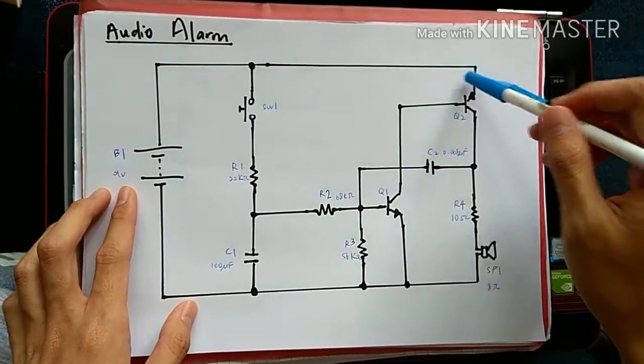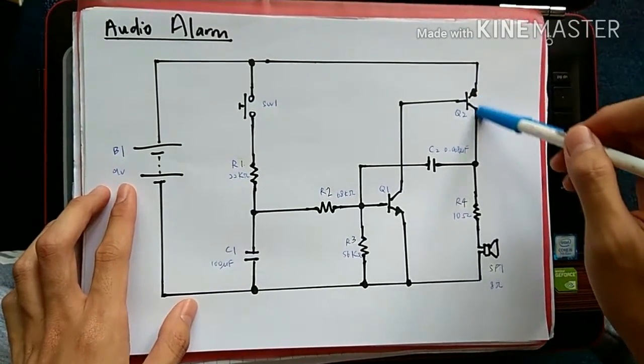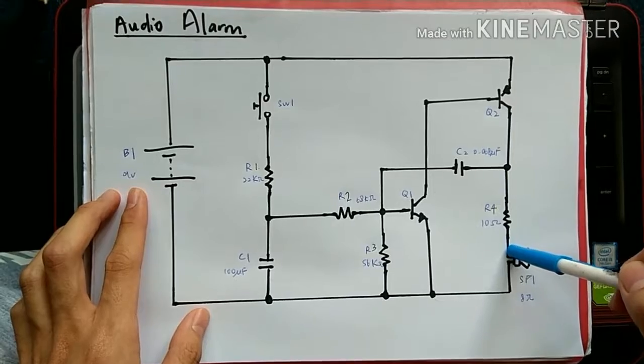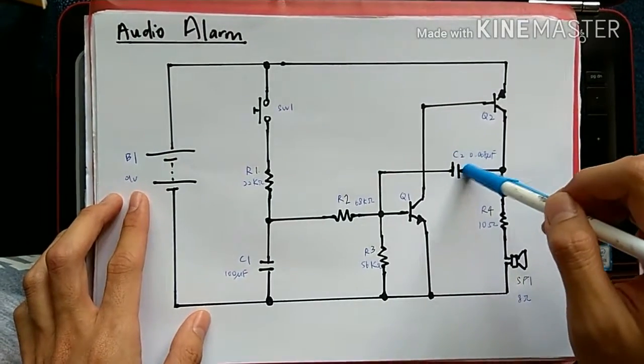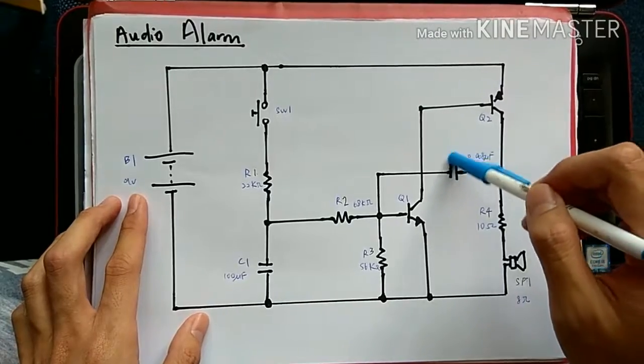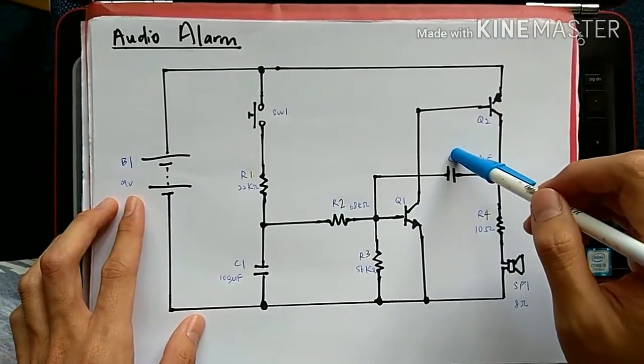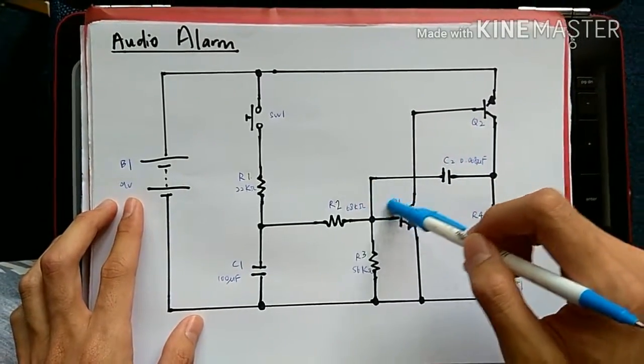By the time, Q2 will charge R4 to go to the loudspeaker. C2 will charge, and when C2 is charging with full speed to the base of Q1,